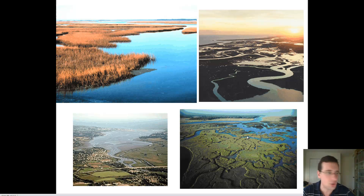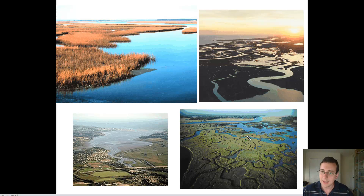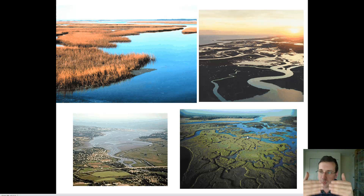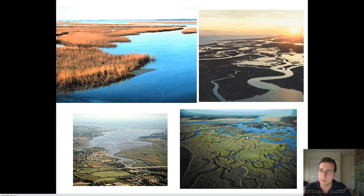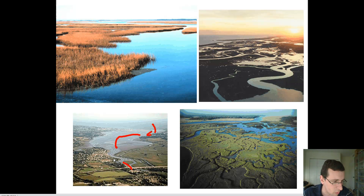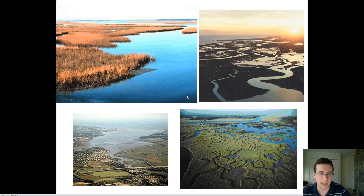Another type of living shoreline is estuaries. Estuaries are areas of water that are fresh water and salt water at the same time — usually an enclosed area with rivers feeding into it and ocean water coming through an inlet. When the tides come in, they bring salt water to mix with the river water and create a brackish water environment. So you have fresh water from a river and salt water from the ocean mixing to make a brackish water estuary.